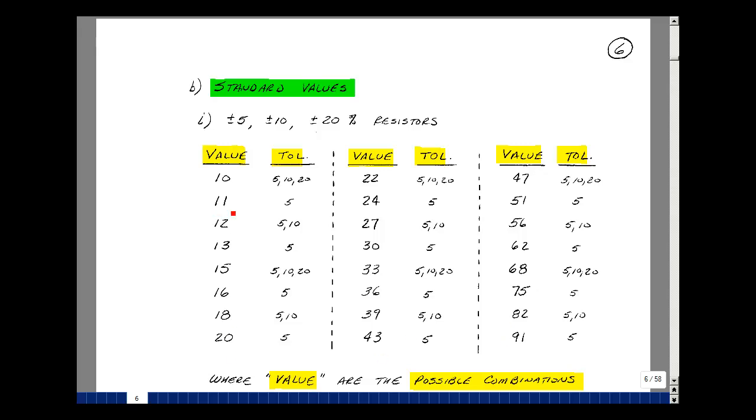And then the tolerances are not available in every combination. For the 1, 0 combination, we can get 5, 10, and 20%. For the value of 1, 1, it's only available in 5%, 5 and 10%, and so on.